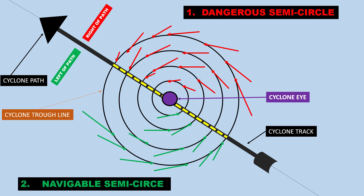Here we have a diagram of the tropical cyclone. The right of the path is called the dangerous semicircle and the left of the path is called the navigable semicircle. You have the cyclone path, the cyclone track, where it is heading to. We are going to make use of this diagram in most of the questions.